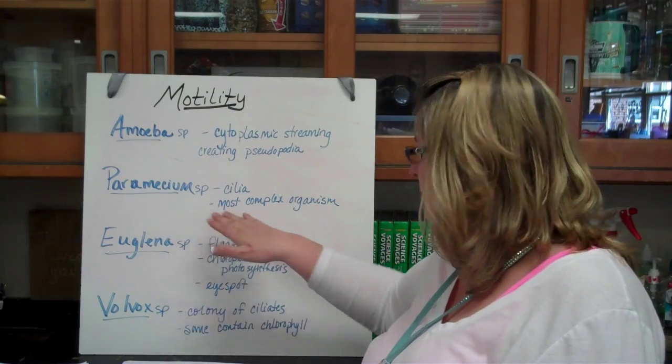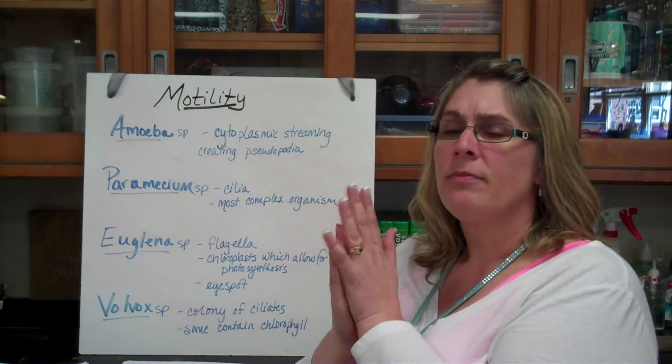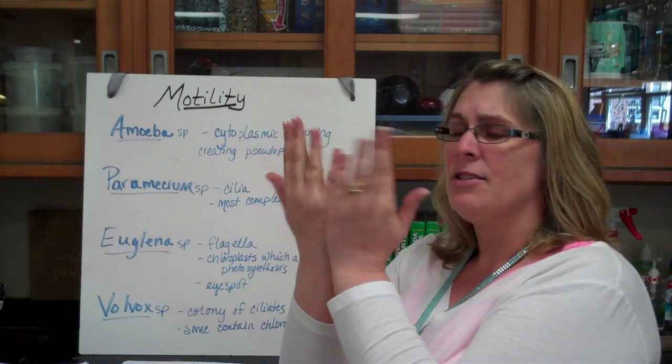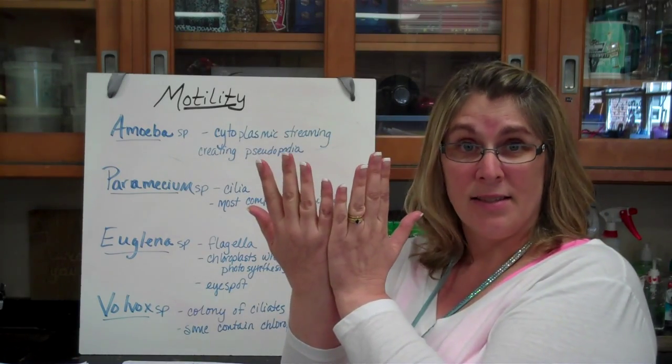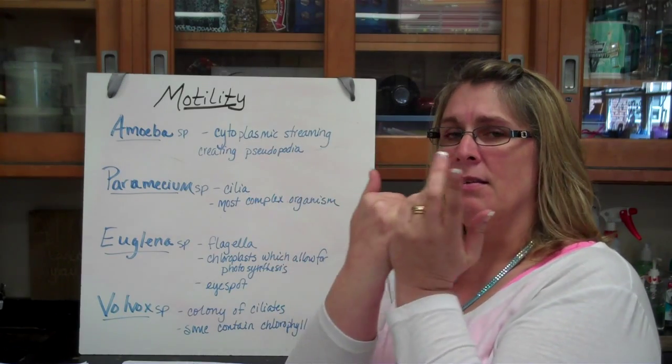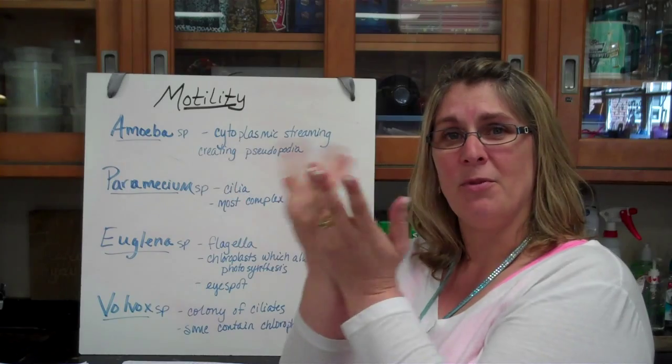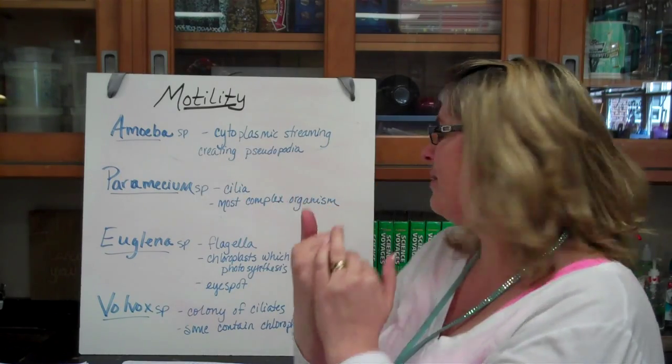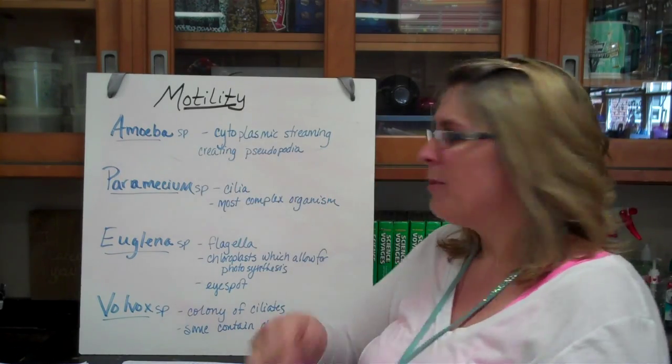A paramecium is different. It has cilia all over it. When I think about cilia, they're little hairs. And if you think about my fingers as the cilia, they actually move in metachromal waves. Which means this one goes, then this, then this. Like this. And that is how they move around. In metachromal waves. That kind of whoosh them around.